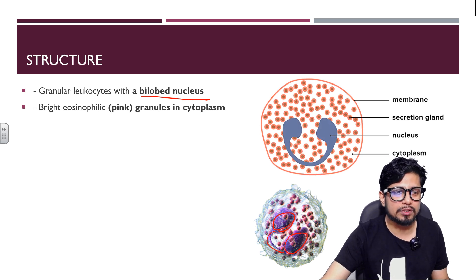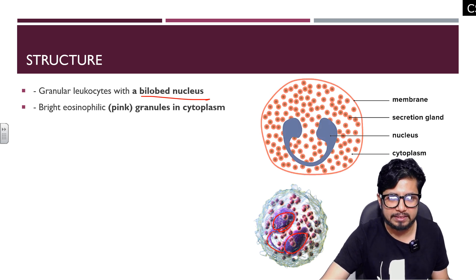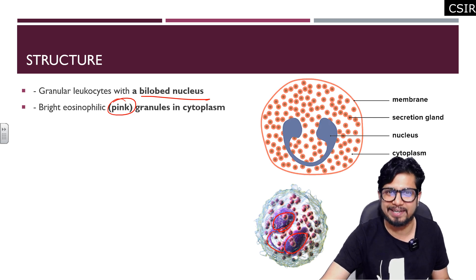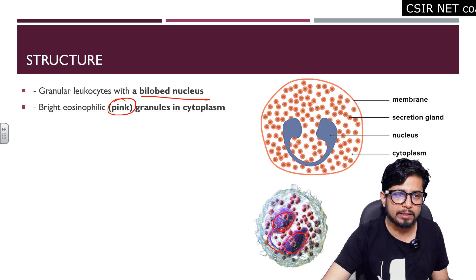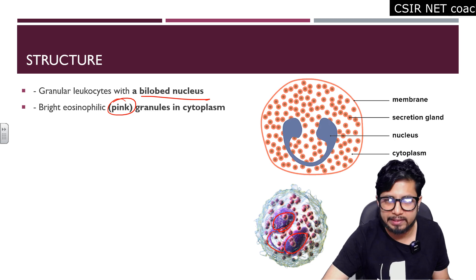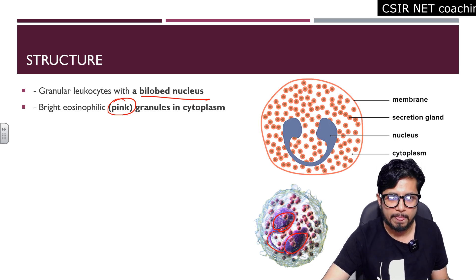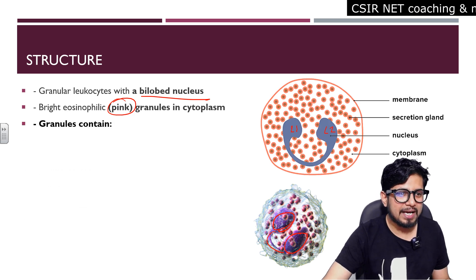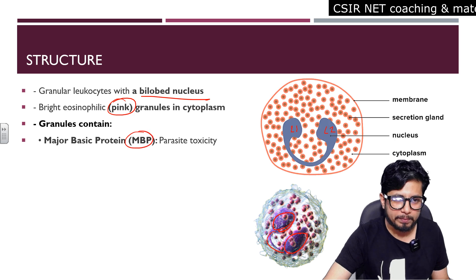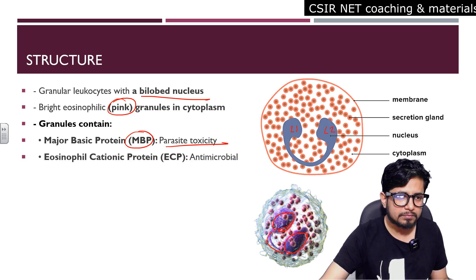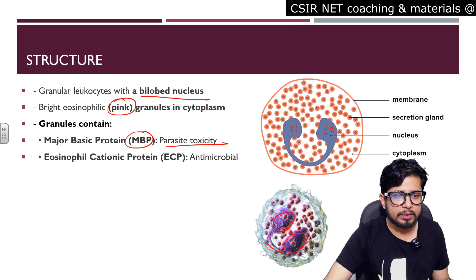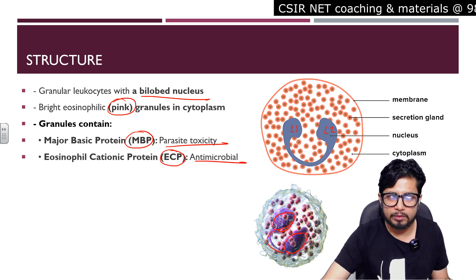The bright eosinophilic granules are present in the cytoplasm, which are pink in color — also known as eosinophilic granules. The granules contain major basic protein or MBP, which is involved in parasite toxicity. There is also eosinophil cationic protein, ECP, which has antimicrobial properties.